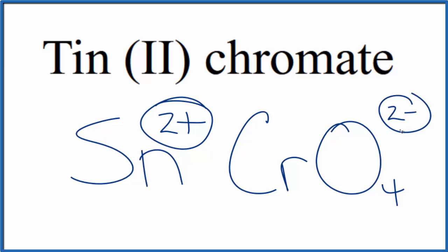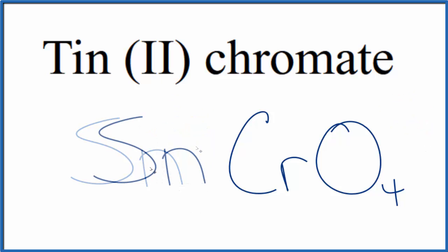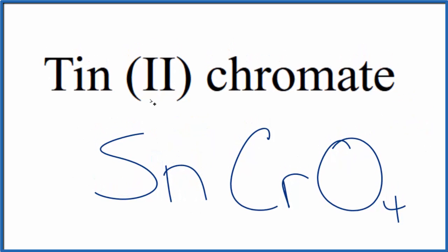2 plus, 2 minus, so that gives us a net charge of 0. So this is the formula for tin(II) chromate: SnCrO4.